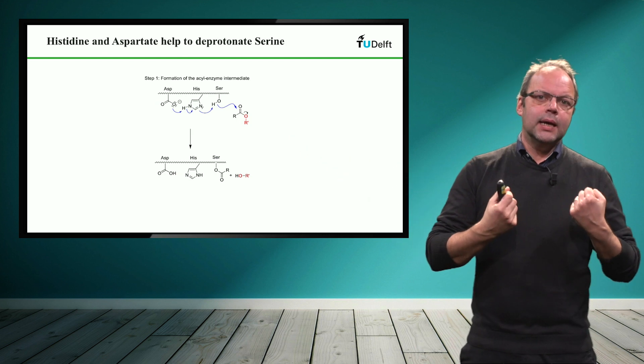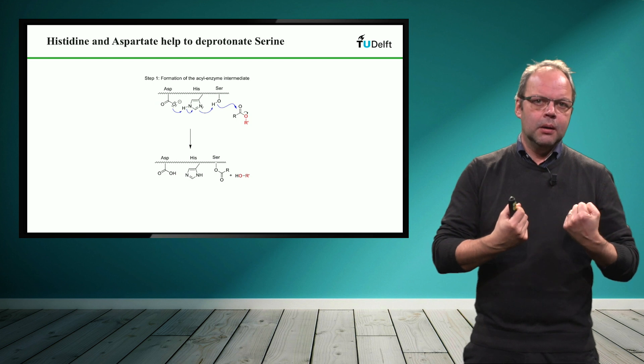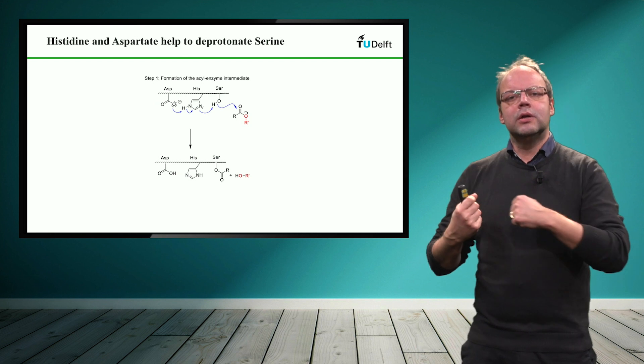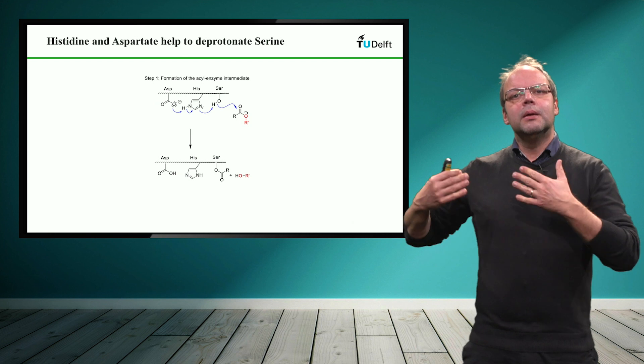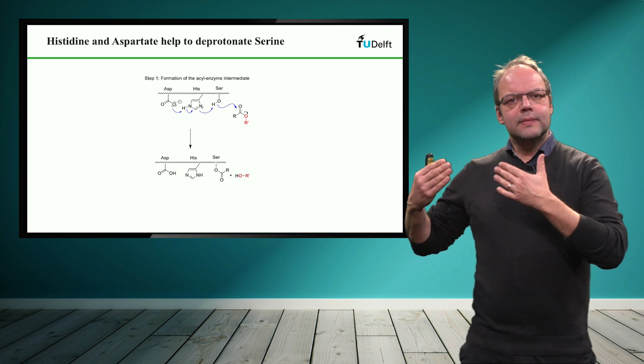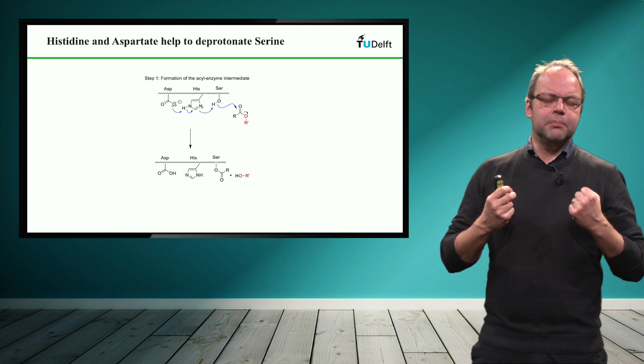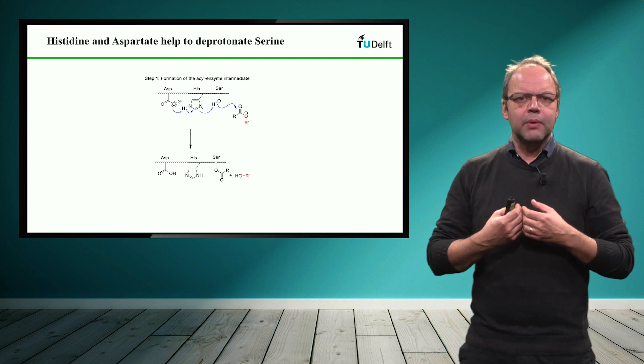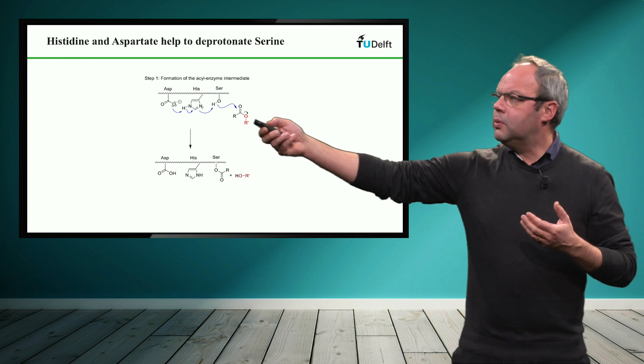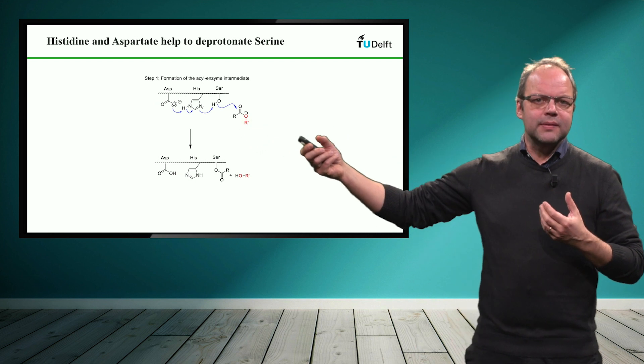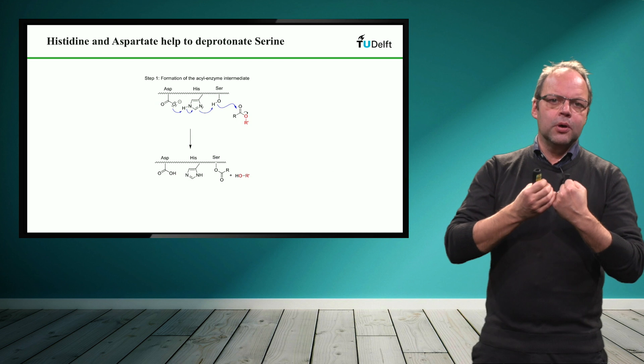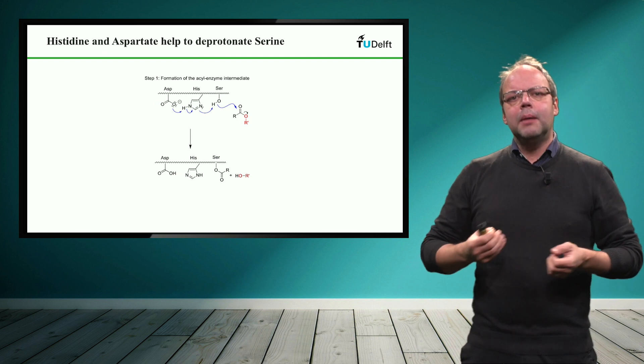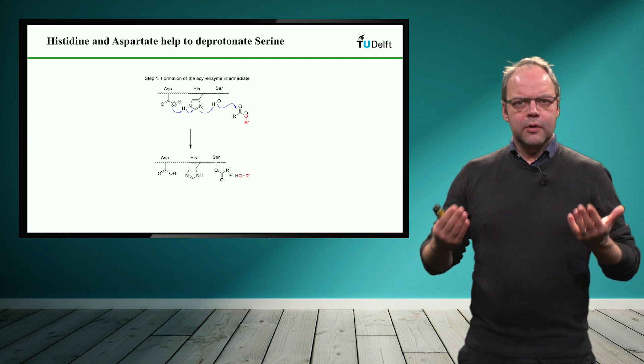In a way it generates a negatively charged serine which then very nucleophilically can attack. The problem then there would be that the histidine taking up another proton would get a positive charge. And this positive charge would be energetically rather unfavorable. That's why we have the third amino acid, the aspartate, which takes up the proton from the histidine and thereby prevents the buildup of a positive charge.